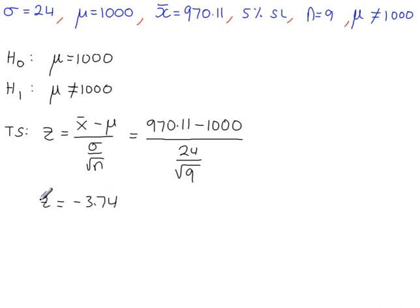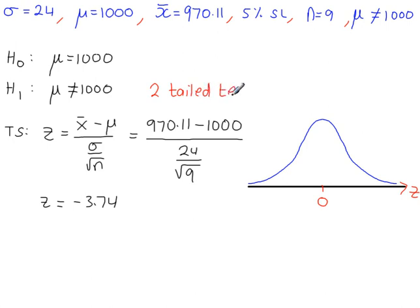So this z value here is our test statistic. Do a sketch of the standard normal distribution. This is a two-tailed test, which means you need to have two lines like this. These are the two tails of the normal distribution. We have a 5% significance level. Because there's two tails, you have to divide that between these two. So 2.5% here, 2.5% here, and 95% here.